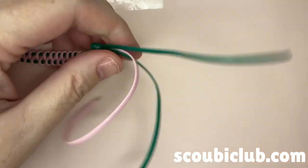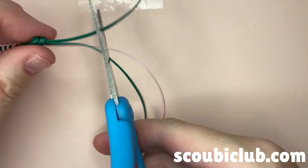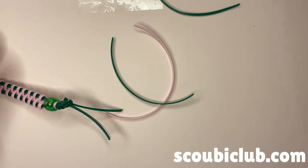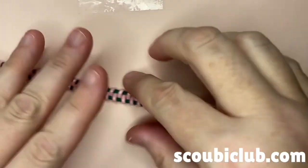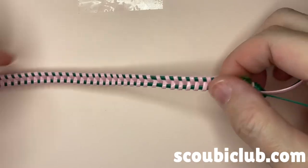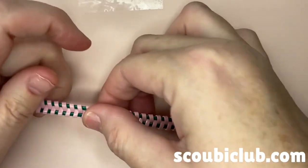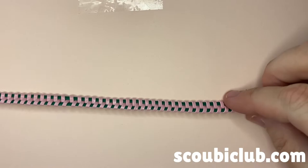From here, you can trim the ends to any desired length. If you're worried, you can put a dot of glue on your knot, but I have not had an issue with them coming undone.